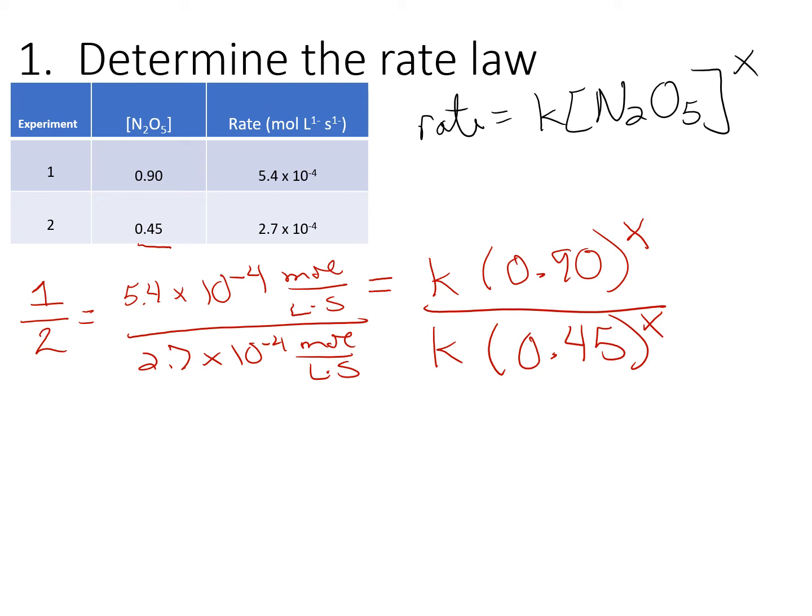Let's cancel anything that we can. Notice that times 10 to the minus fourth can go away. Moles per liter second goes away. I did forget to write the units here. We'll squeeze in a little molarity. They both go away. Our K goes away. At this point, we have 5.4 divided by 2.7, which is 2, equals 0.9 to the X divided by 0.45 to the X, which is 2 raised to the X. So X is a value of 1 because 2 to the first power equals 2.